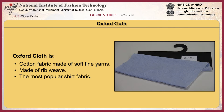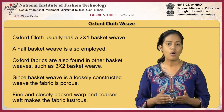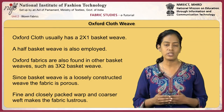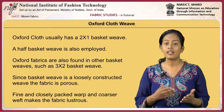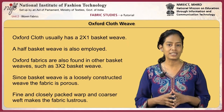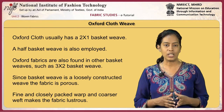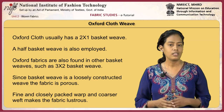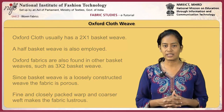Oxford is a fabric made of soft fine yarns. The fabric is made of rib weave and is the most popular shirting fabric. Usually a 2x1 basket weave, also called half basket weave, is employed. Oxford fabrics are also found in other basket weaves like 3x2. Since basket weave is a loosely constructed weave, the fabric is porous. Fine and closely packed warp with coarser weft makes the fabric lustrous.